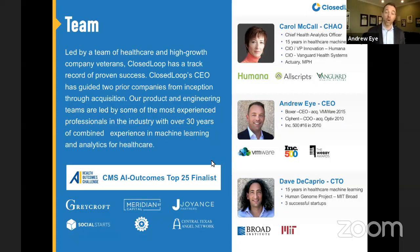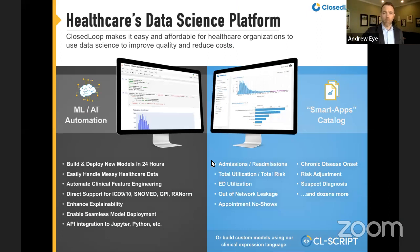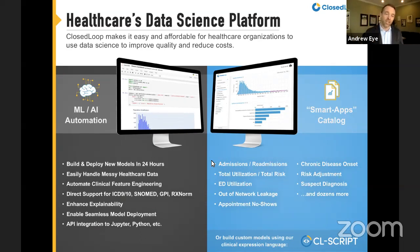Predictive analytics and machine learning for healthcare is literally the only thing that we do. We were recently announced as one of the top 25 finalists for the CMS AI for Outcomes Challenge. We refer to Closed Loop as healthcare's data science platform, built on two core pillars: a machine learning automation platform built specifically for healthcare — a workbench for data scientists to build predictive models better, faster, and cheaper — and a catalog of off-the-shelf models for common use cases like admissions and ED utilization. Our CTO says we spent three years building a platform so we could build a COVID-19 model in a weekend.